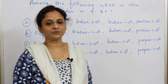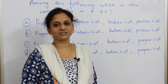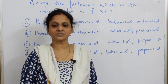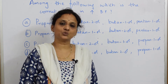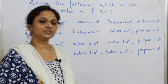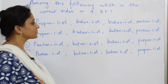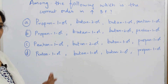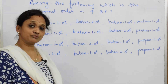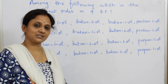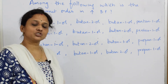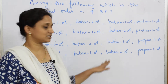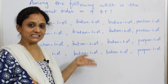Let us do one more question on boiling point. We have already done questions based on branching and based on number of carbon atoms. Now let us do one more similar question. Such types of questions are compulsory in your board paper — comparison of acidic strength, comparison of boiling point, which is basic in nature, which is soluble in water. Please don't neglect such questions. It's very easy.